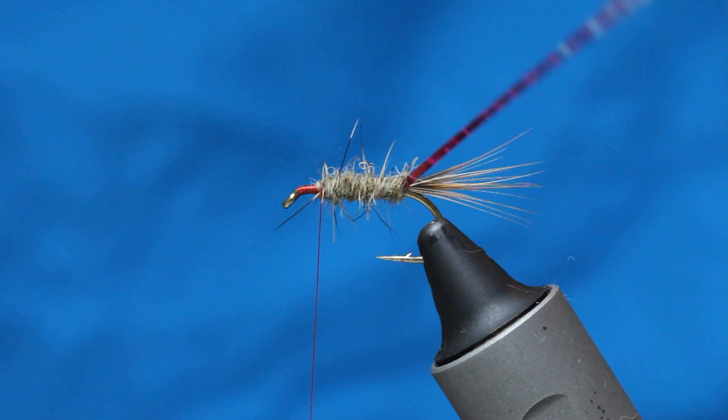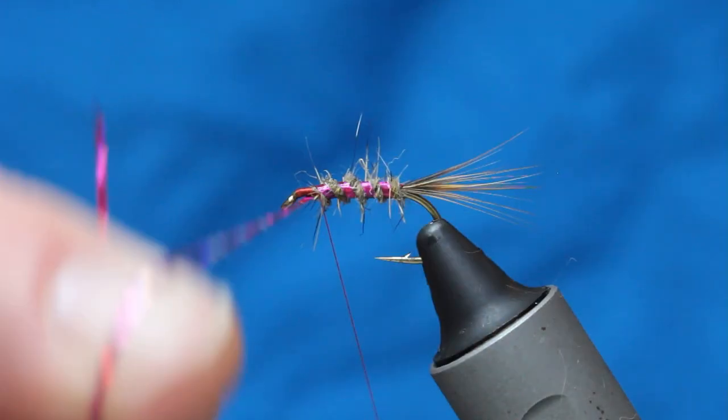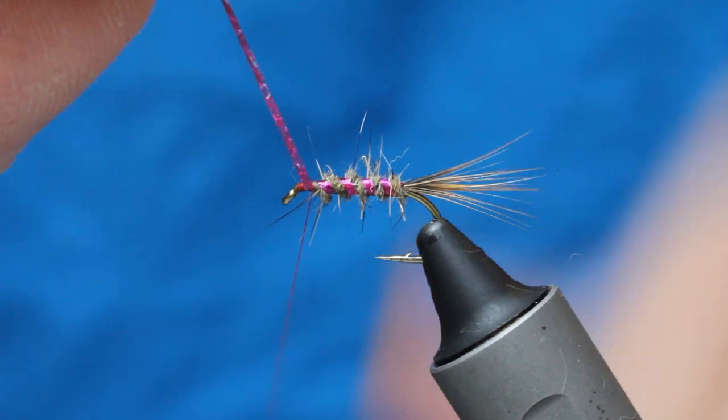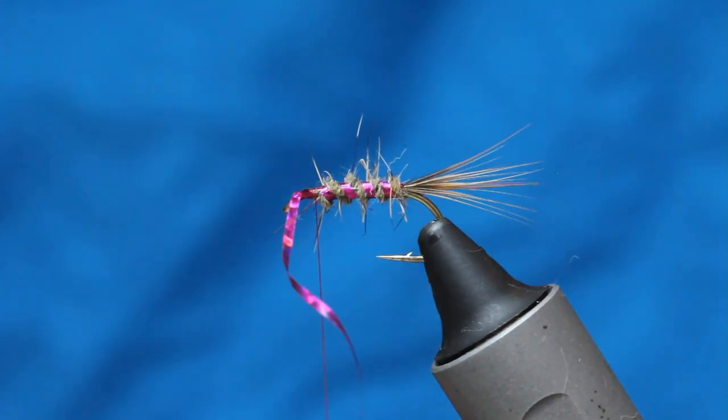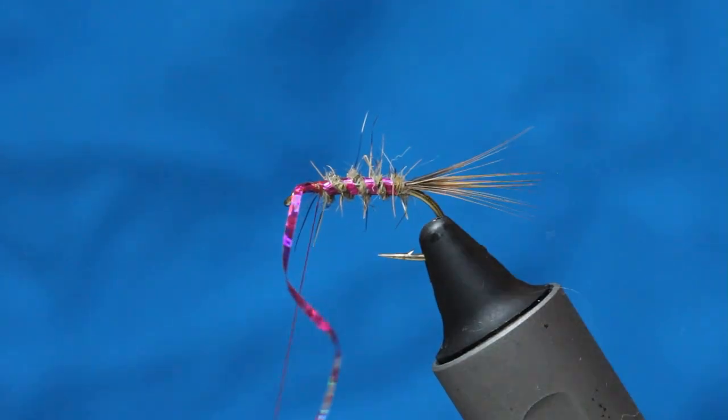I'm now going to come up in the opposite direction of our dubbin wraps. There's two. There's three. There's four. There's five. And just secure that. Five wraps up the body there.